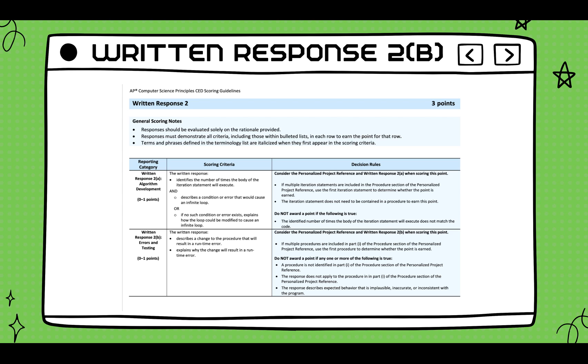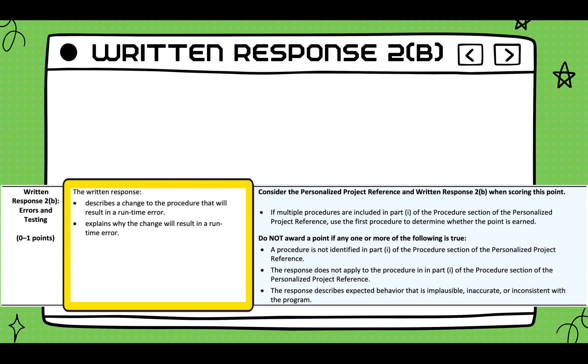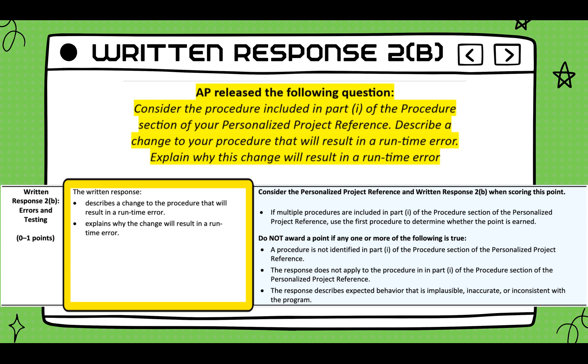Row number five deals with errors in testing. The scoring criteria asks you to describe a change to the procedure to result in a runtime error and explain why the changes will result in a runtime error. Let's look at a question released by AP. Consider a procedure included in part one of your procedural section of your personalized project reference. Describe a change to your procedure that will result in a runtime error. Explain why this change will result in that runtime error.